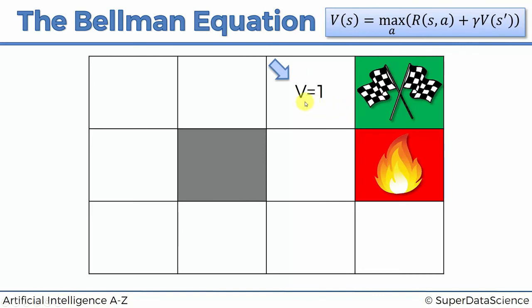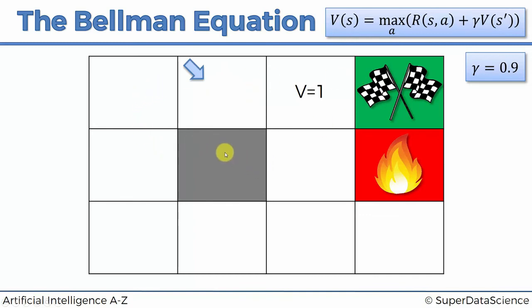Now things get interesting when we move backwards a bit. Let's calculate the value of being in the state one step further back. For that we need gamma — let's say our discounting factor is 0.9. Based on our intuition and knowing how this maze works, we know that the best possible action from here is to go to the right. So we plug it in: you don't get any reward moving from here to there, so it's zero reward plus 0.9 times the value of the new state, which is one. So the result is 0.9 times one equals 0.9. That's our value: 0.9.